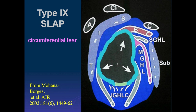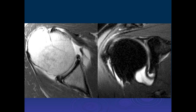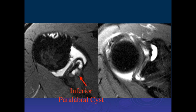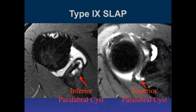Type 9 is basically a circumferential tear — described by Rick Ryu, an orthopedic surgeon in Santa Barbara. Looking at it we see anterior tear, posterior tear, superior tear, and inferior tear — a circumferential tear, which he called a Type 9 SLAP tear, often with associated paralabral cysts.